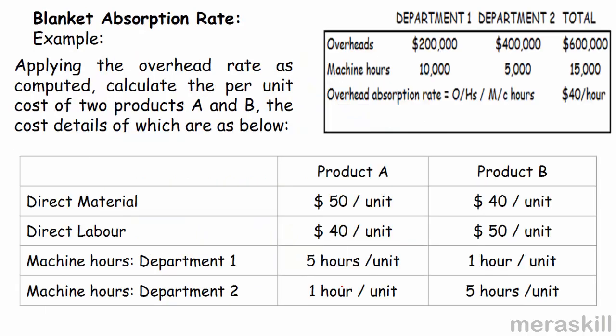Now, applying this rate as computed, calculate the per unit cost of two products, A and B. Product A has direct material of $50 per unit and direct labor of $40 per unit. Product B has direct material of $40 and direct labor of $50. For machine hours, product A spends 5 hours in department 1 and 1 hour in department 2, while product B spends 1 hour in department 1 and 5 hours in department 2.